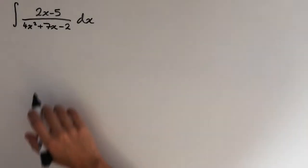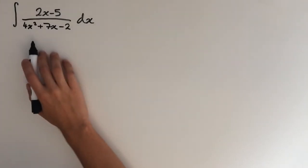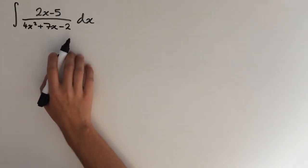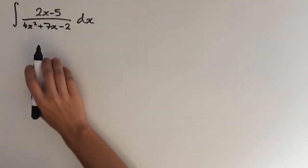In this video I'm going to show you how to find the integral of 2x-5 all over 4x squared plus 7x-2. Now the method we're going to use to solve this integral is partial fractions.